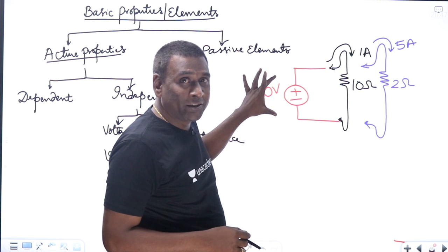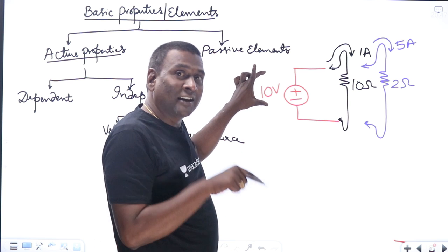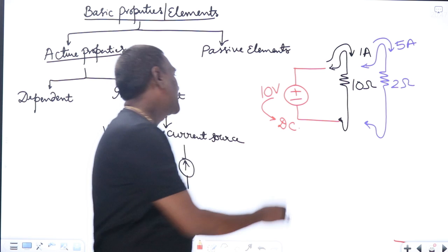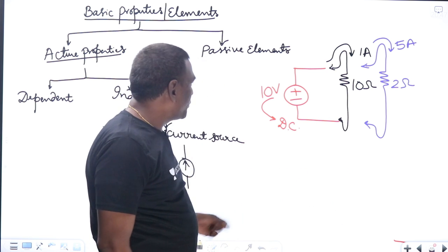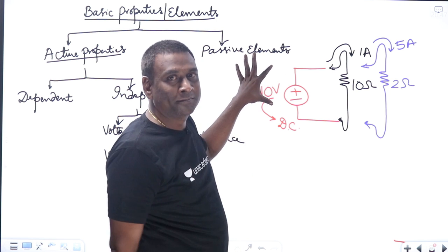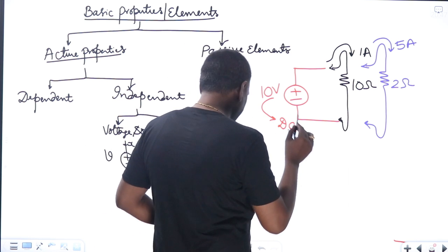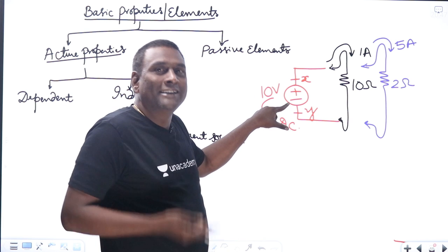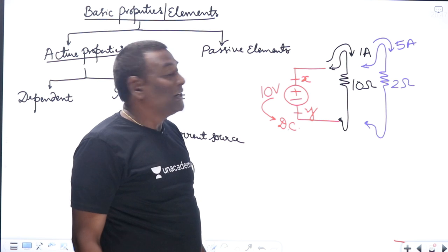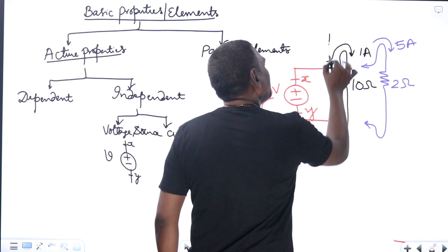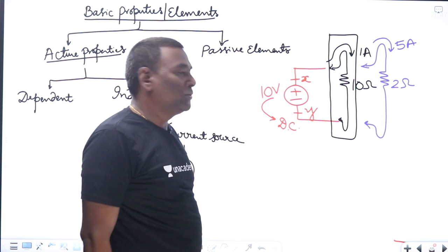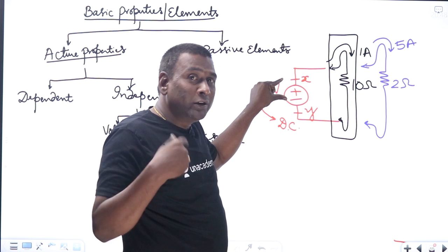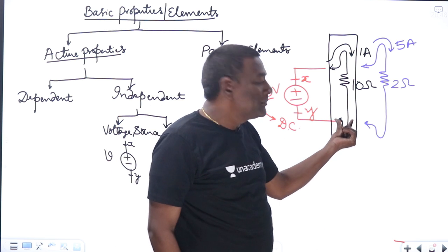Now observe: at the voltage source, is the voltage varying? No — voltage is constant at 10 volts. For a voltage source, voltage is known, but current is unknown. That particular current will be decided by the connected system. You cannot determine the current flowing through a voltage source without knowing the external circuit.